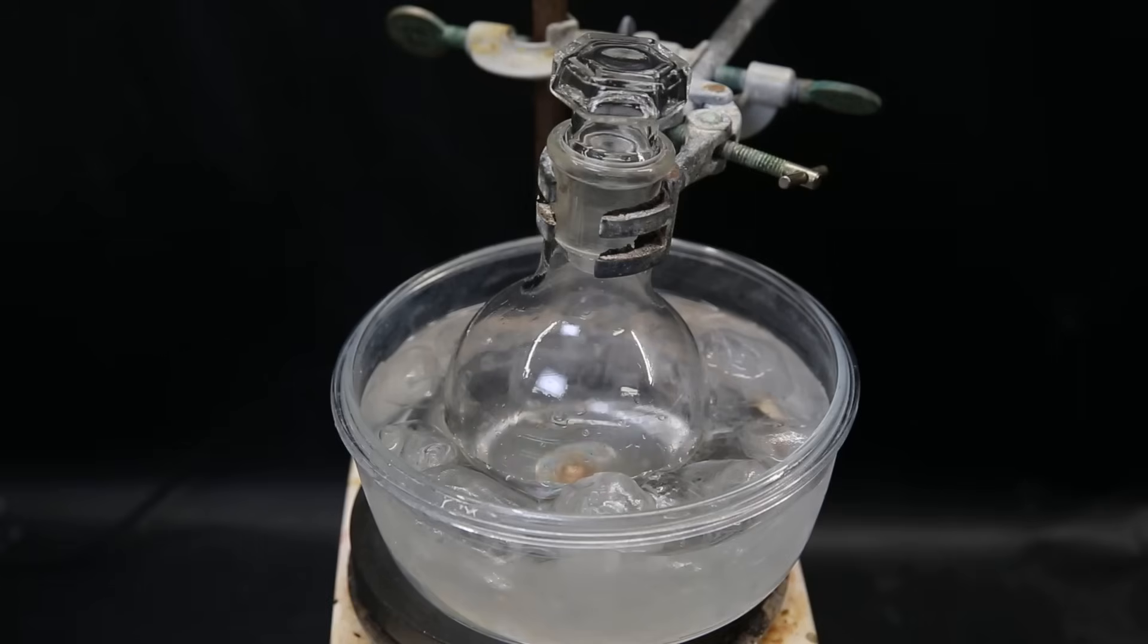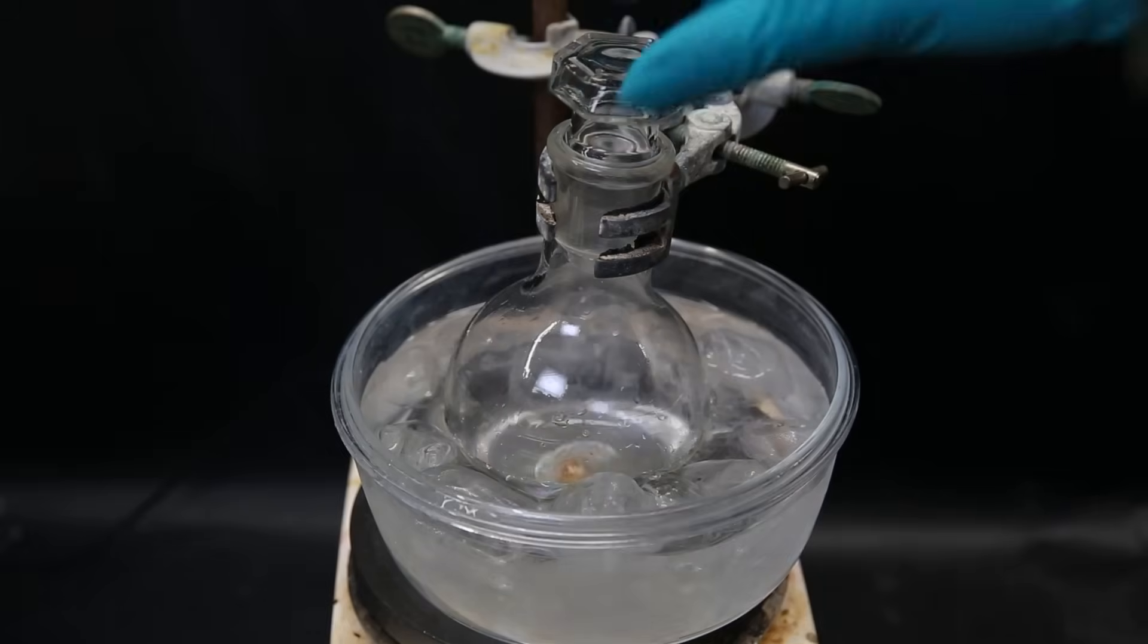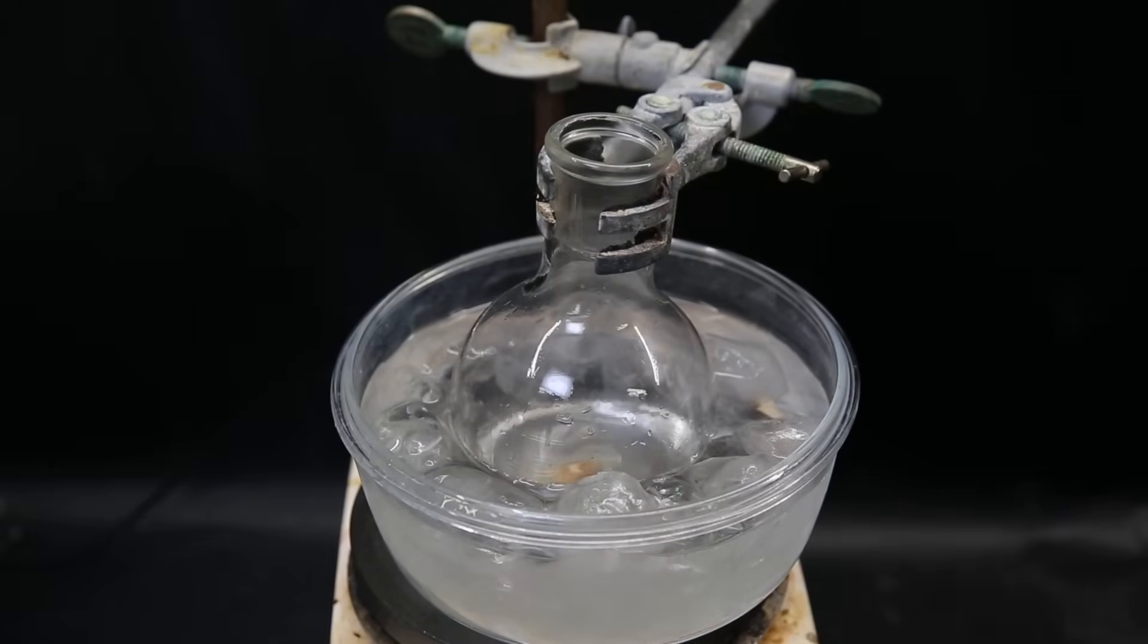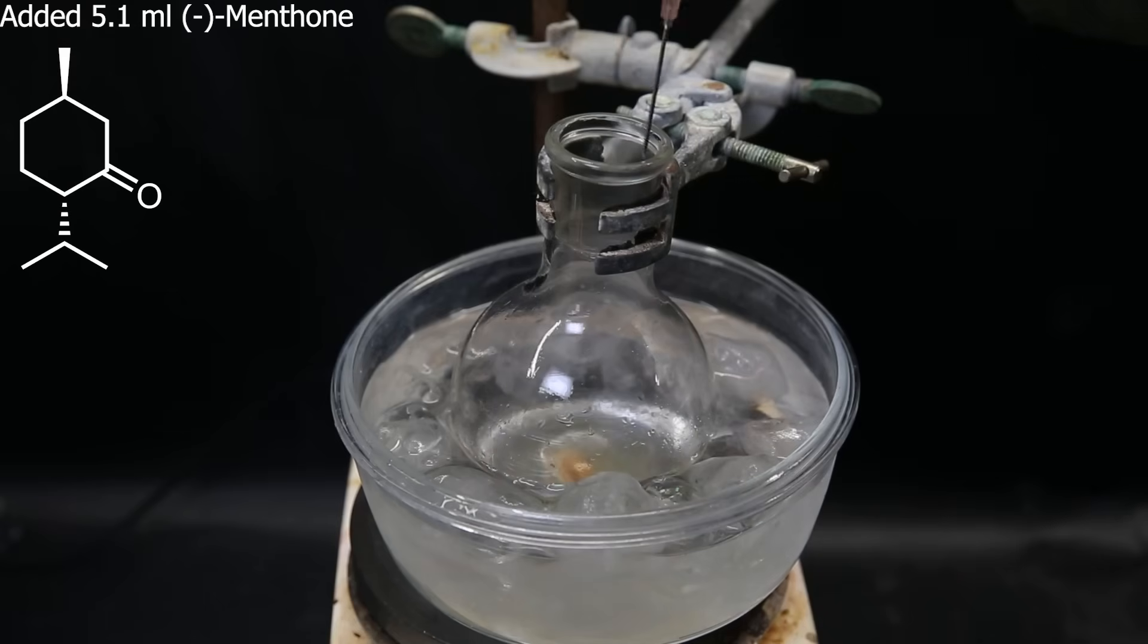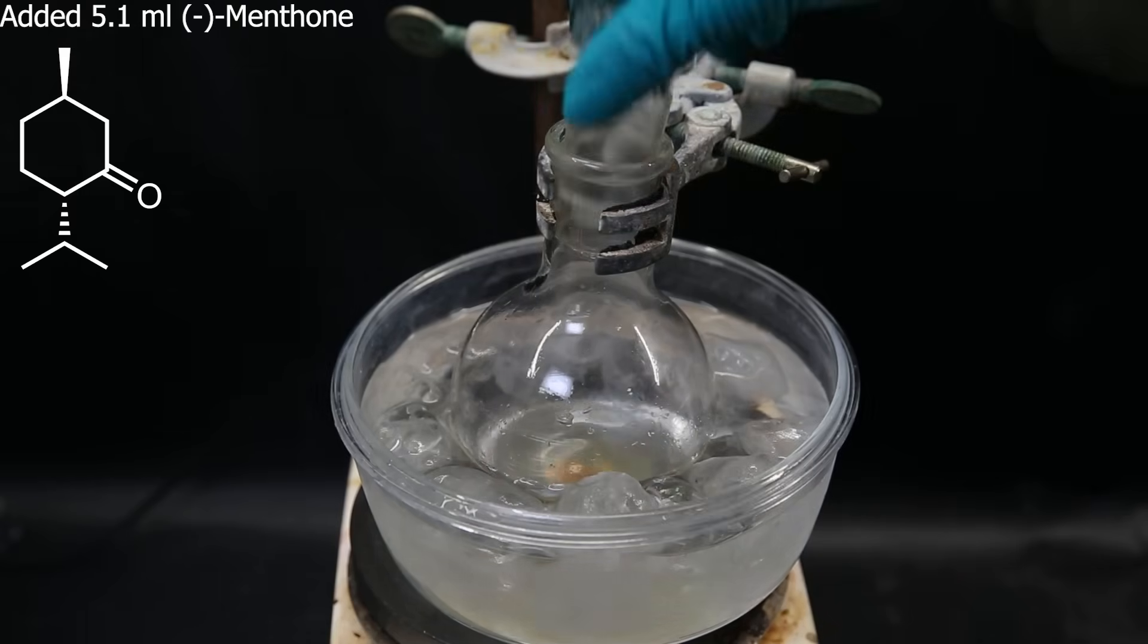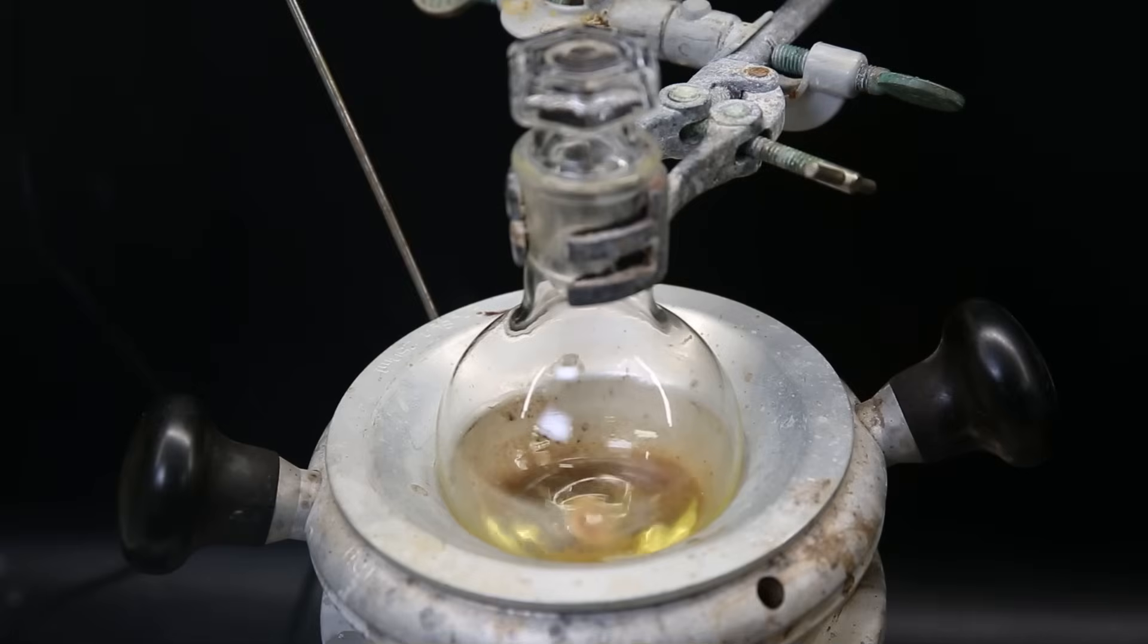I then set the flask with the Alpine borane in an ice bath and wait for it to cool down. I then remove the stopper and at once add 5.1 mls of Levomenthone. There is an initial exothermic reaction, and I stopper the flask again. After a few minutes, I remove the ice bath and set the flask in a heating mantle to keep it around room temperature. The mixture has quickly turned yellow, and now I leave it to stir for a day.